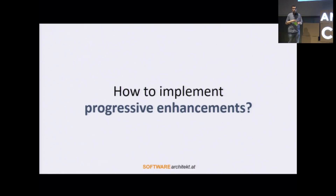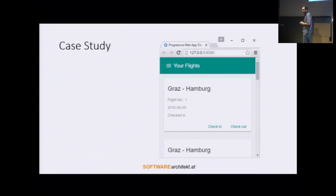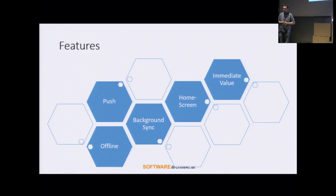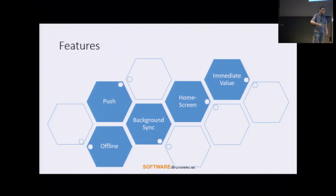The question is how to implement such progressive enhancements. I have prepared a case study consisting of a very simple application using Angular Material, about flight bookings. It displays bookings for flights you have created. This case study allows for offline capabilities, push notifications, background synchronization, installation to the home screen of your mobile device, and gaining immediate value — you can start it and get immediate value without waiting for something to be downloaded.